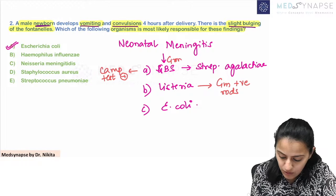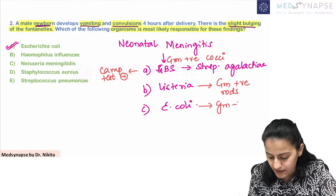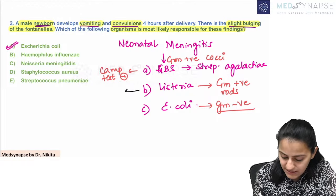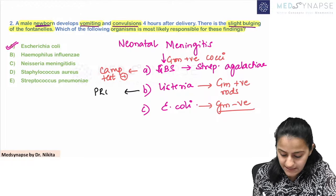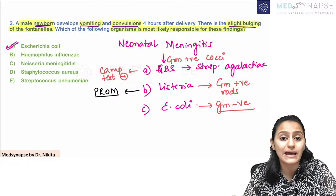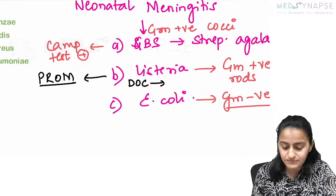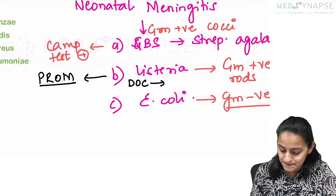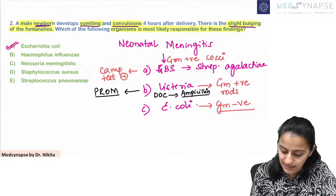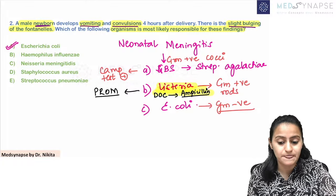Is Listeria gram positive or gram negative? Listeria is gram-positive bacilli (gram-positive rods), while Group B Streptococcus is gram-positive cocci. E. coli is gram-negative. When do we have special risk of Listeria meningitis in the newborn? When there is premature rupture of membranes — chorioamnionitis — Listeria comes into play there. The drug of choice for Listeria is ampicillin. This is frequently asked — drug of choice for Listeria is ampicillin.